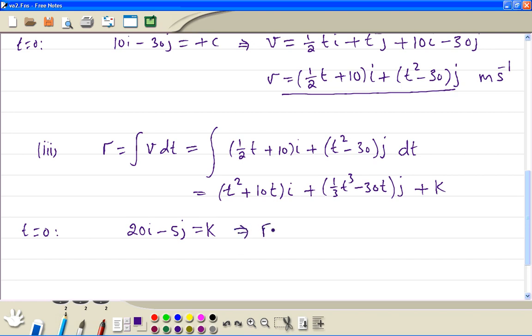Therefore, r equals t squared plus 10t i plus one third t cubed minus 30t j, then plus k which is 20i minus 5j.